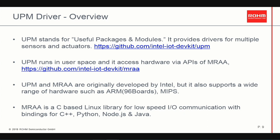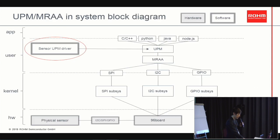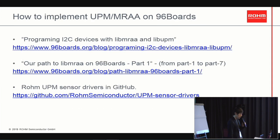MRAA is a C-based Linux library for low-speed I/O communication with bindings for C++, Python, Node.js and Java application layers. As you can see in the diagram, the UPM driver runs in user space and accesses hardware under the Linux kernel via APIs of MRAA. MRAA supports I2C, SPI and GPIOs. You can find how to implement UPM and MRAA on 96Boards from these materials. The first and second URLs are in the 96Boards community site, and the third is ROM Semiconductor's GitHub site which includes several sensor drivers based on UPM.